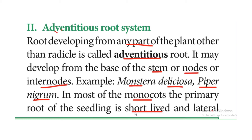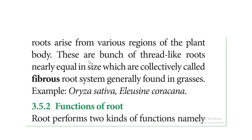In monocots, the primary radical root is short-lived — it is destroyed early. Instead, small, thread-like roots form from the basal region of the plant, giving rise to the fibrous root system.